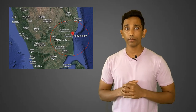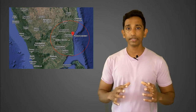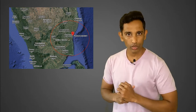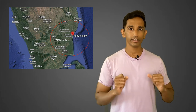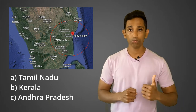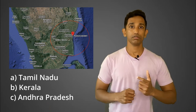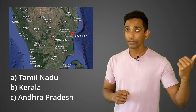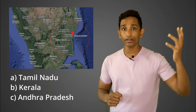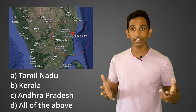Usually my brother's reasoning is very irrational, but this time he has a valid point. Let me ask you a question: which state surrounds the Union Territory of Puducherry? A. Tamil Nadu, B. Kerala, C. Andhra Pradesh. If you said A. Tamil Nadu, you are wrong. Because the answer is D. All of the above.